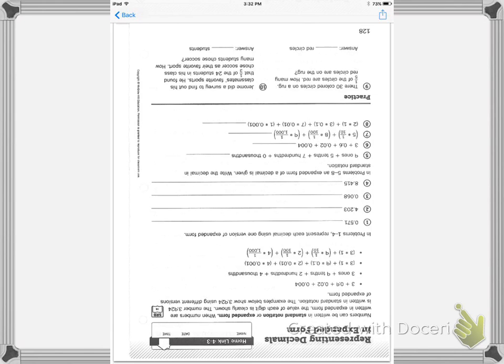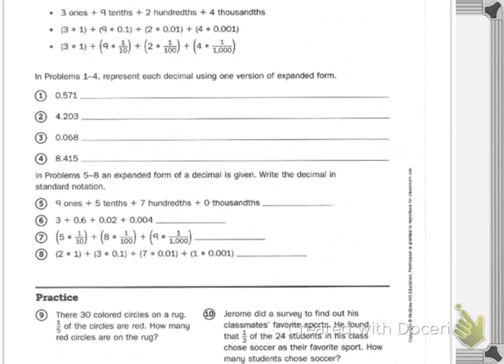Now let's look at 5 through 8. In problems 5 through 8, an expanded form of a decimal is given. Write the decimal in standard notation. I'm going to do 5 and 7 for you. Number 5 says I have 9 ones plus 5 tenths plus 7 hundredths plus 0 thousandths. We'll just write right through. Now, you're not always going to have a one, or a tenth, or a hundredth, or a thousandth.